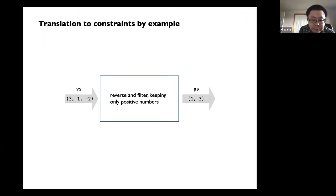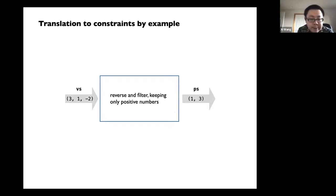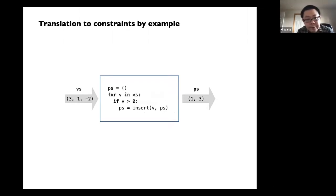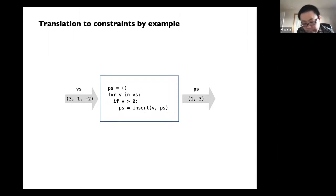Let me give you a concrete example to see how the encoding works. Imagine we have a function that does two things: it reverses a list and also does some filtering — removing negative numbers and zeros, keeping only positive numbers. For example, if you have an input list [3, 1, -2], the output will be just [1, 3]. The pseudo code loops over the input, and if you have a positive value V, you just insert it to the result. That's a very simple toy program.